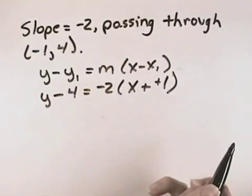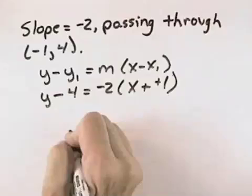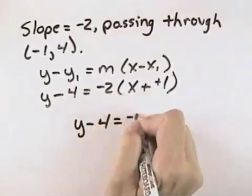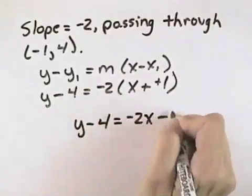But we're also asked to write our equation in slope-intercept form. To do that, we need to solve for y. So what we might do is first simplify the right-hand side to distribute the negative 2 through to get negative 2x minus 2.